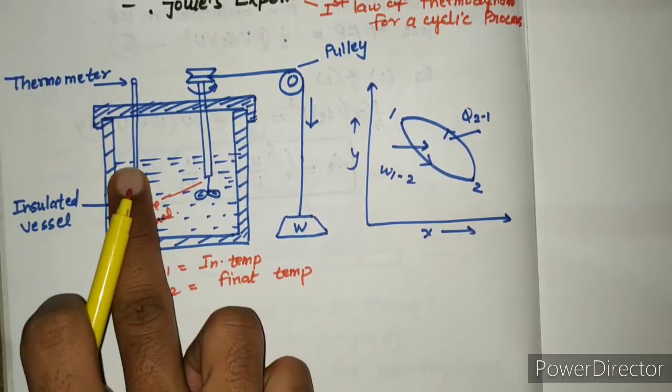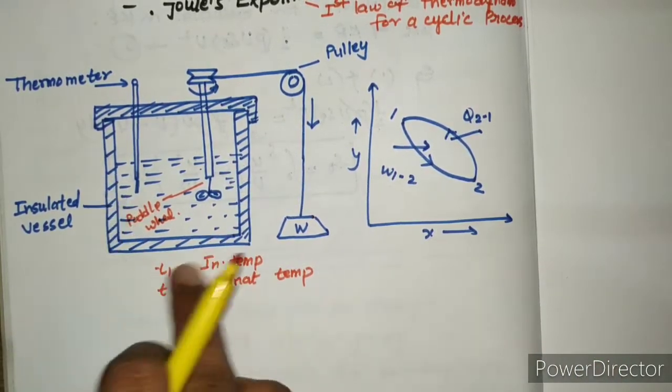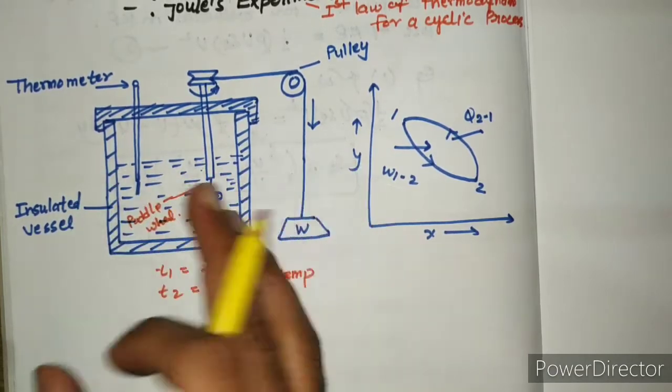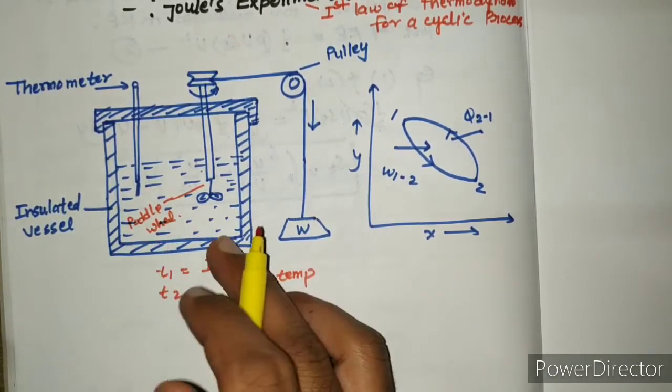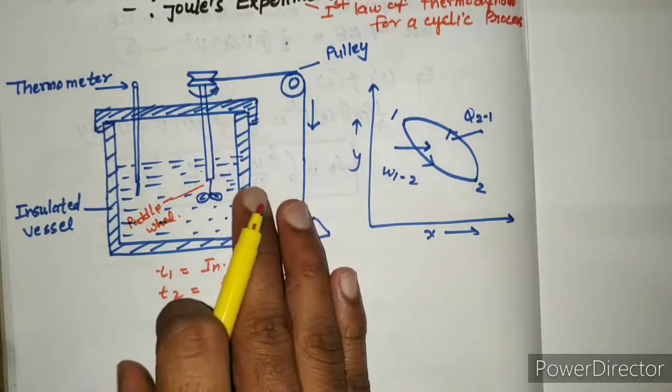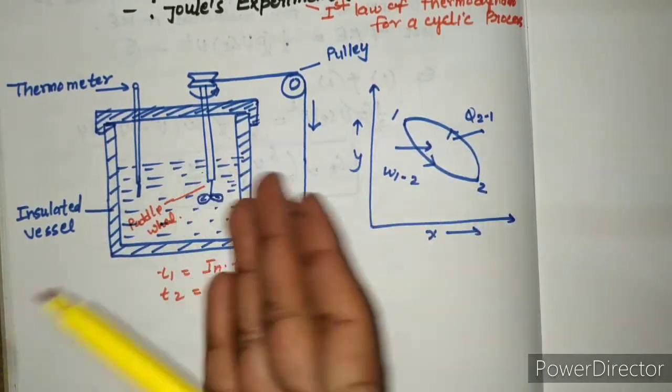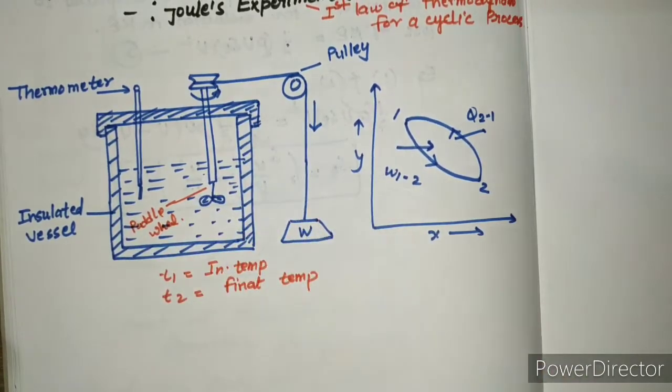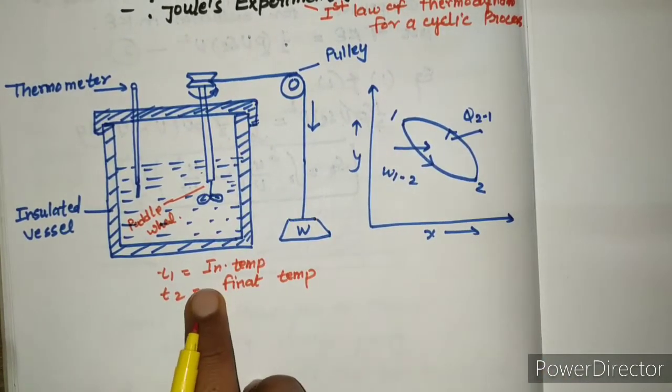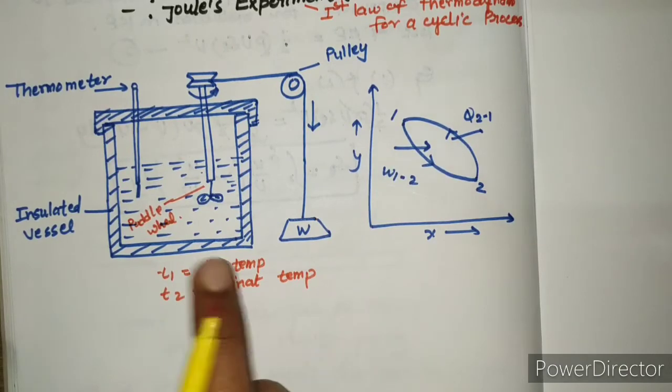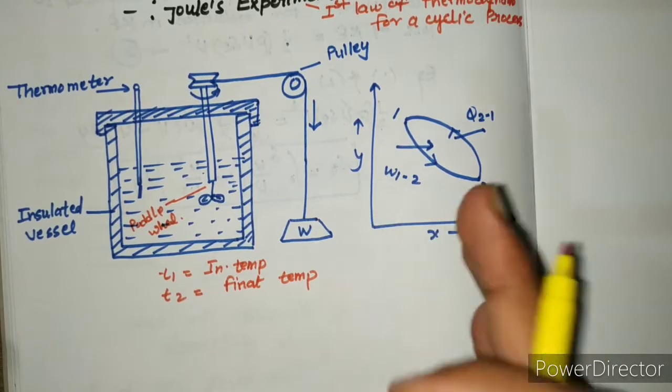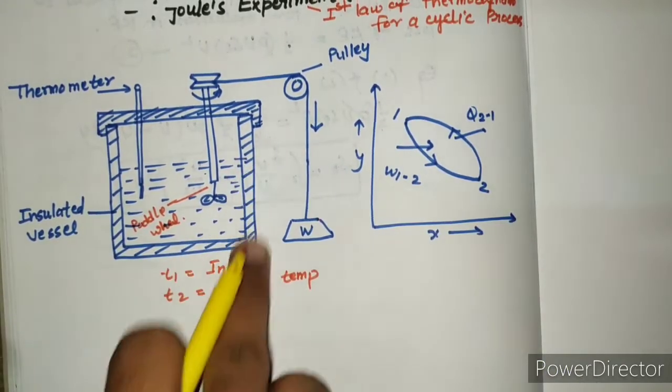Suppose if the insulation is removed from the container, then the system and surrounding interact with each other, resulting in transfer of heat from system to surrounding. This continues till the system returns back to initial temperature T1. Now the system attains thermal equilibrium with the environment because the insulated vessel has been removed.